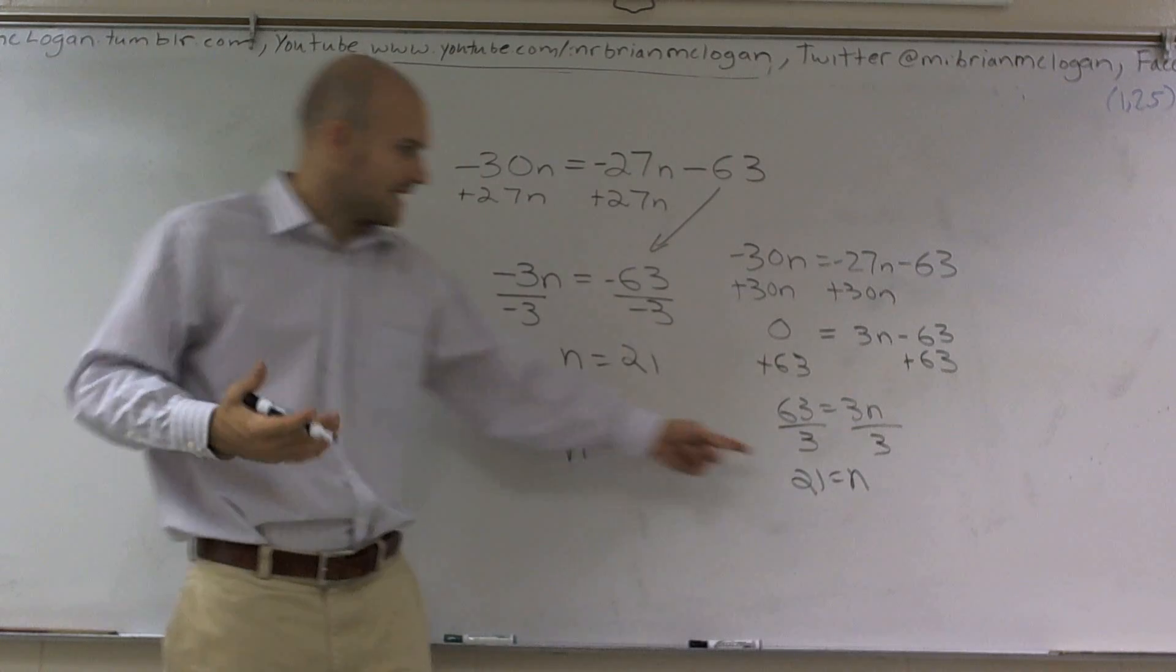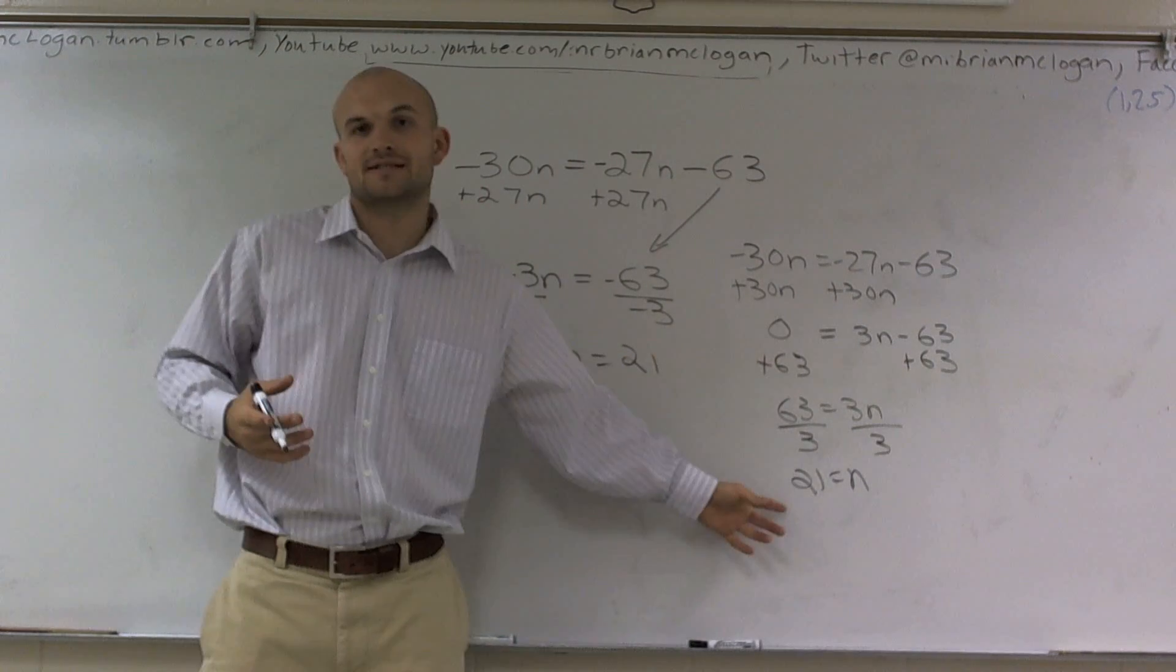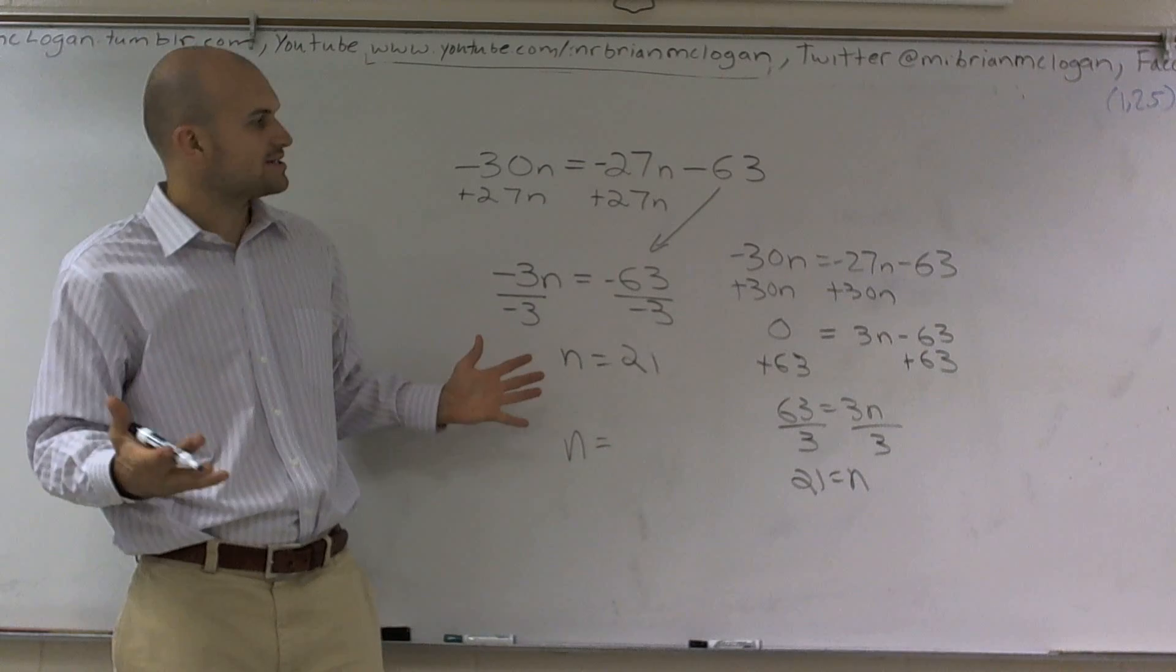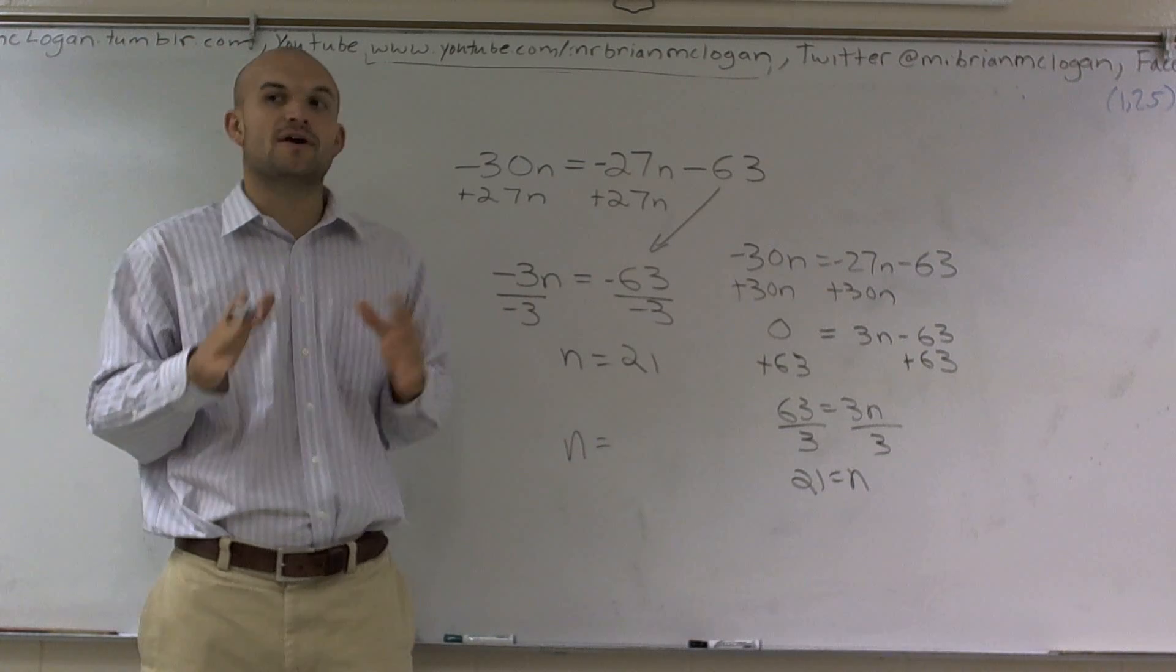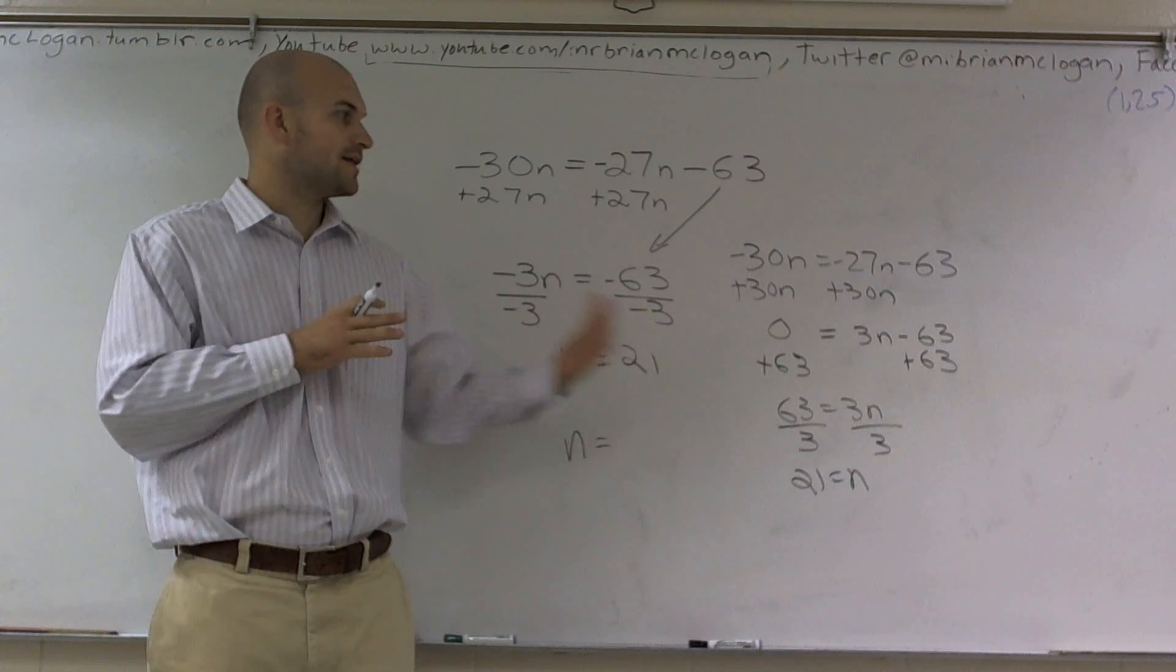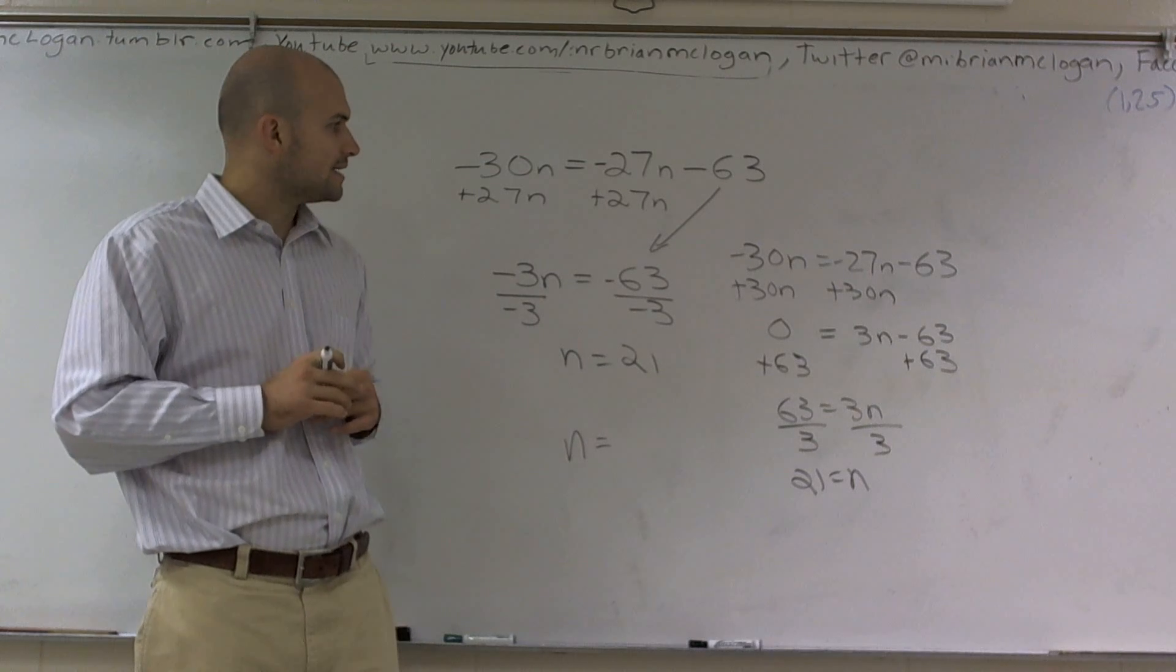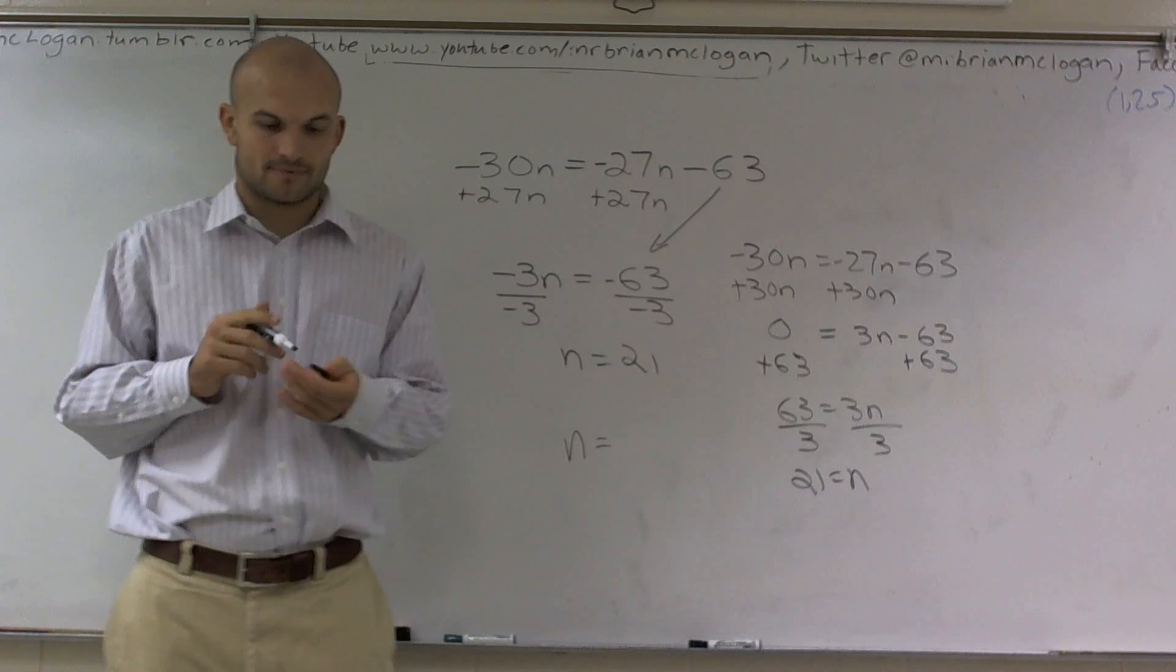Either way, if you notice, my n is still by itself and I still get the exact same answer. So whichever way you want to solve for it, just make sure you're following the rules of equality by doing everything on both sides and combining your variables together. And that's it!